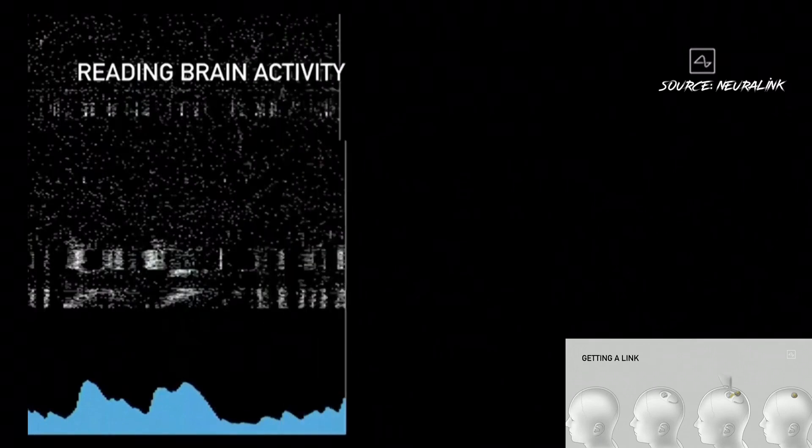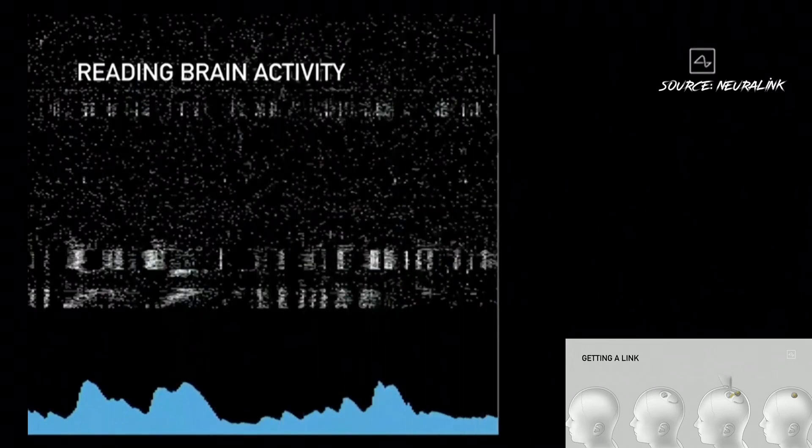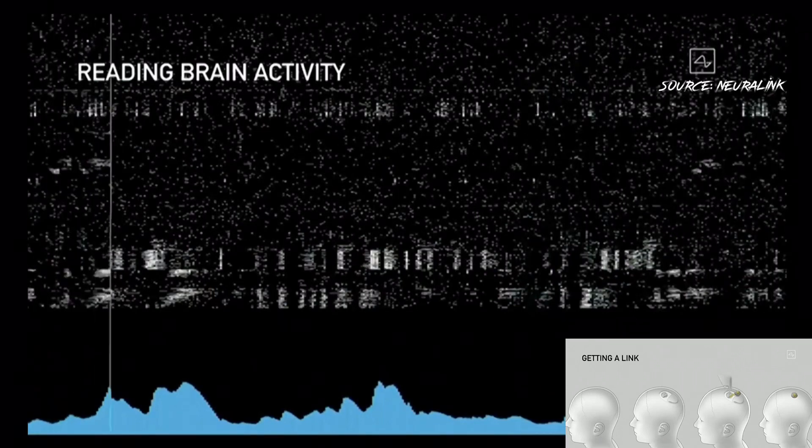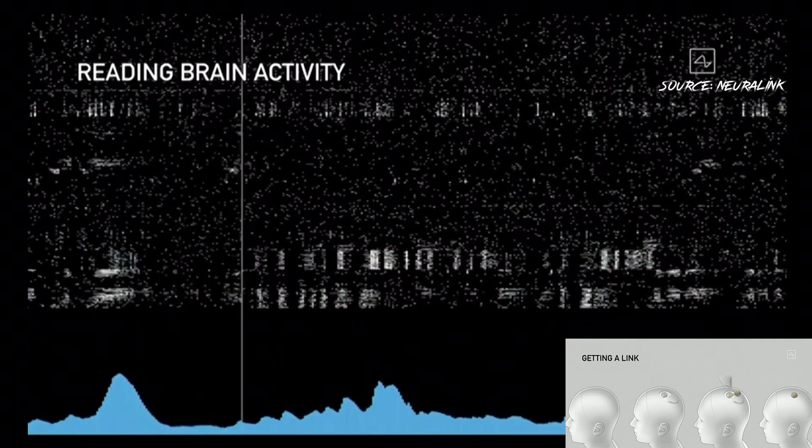As I was saying, each of those dots represents a neural spike, and the blue chart at the bottom is showing an accumulation of neural spikes in that region.